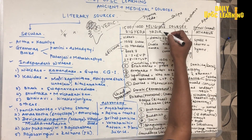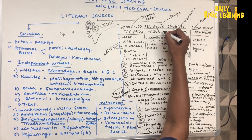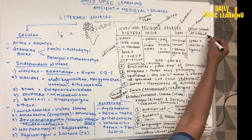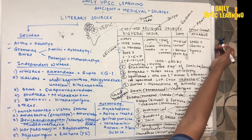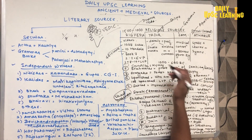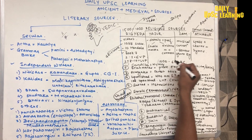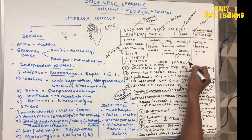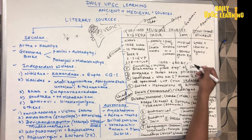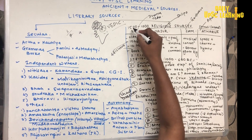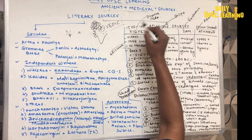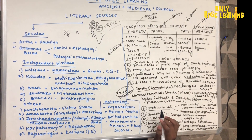The literature of the Later Vedic period is Yajurveda, Samveda, and Atharvaveda. The timeline is 1000 to 600 BC for the Later Vedic period, and 1500 to 1000 BC for the Rigvedic period.